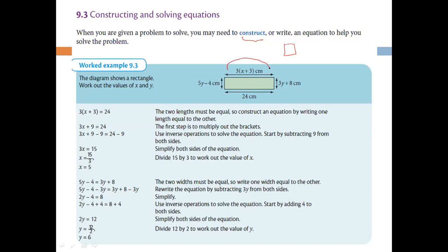One side of this rectangle — these sides — we have the width or length. And this side is the height. So one height is 3y + 8 and the left side height is also 5y − 4. There are different expressions but their values are always equal because this shape is a rectangle.